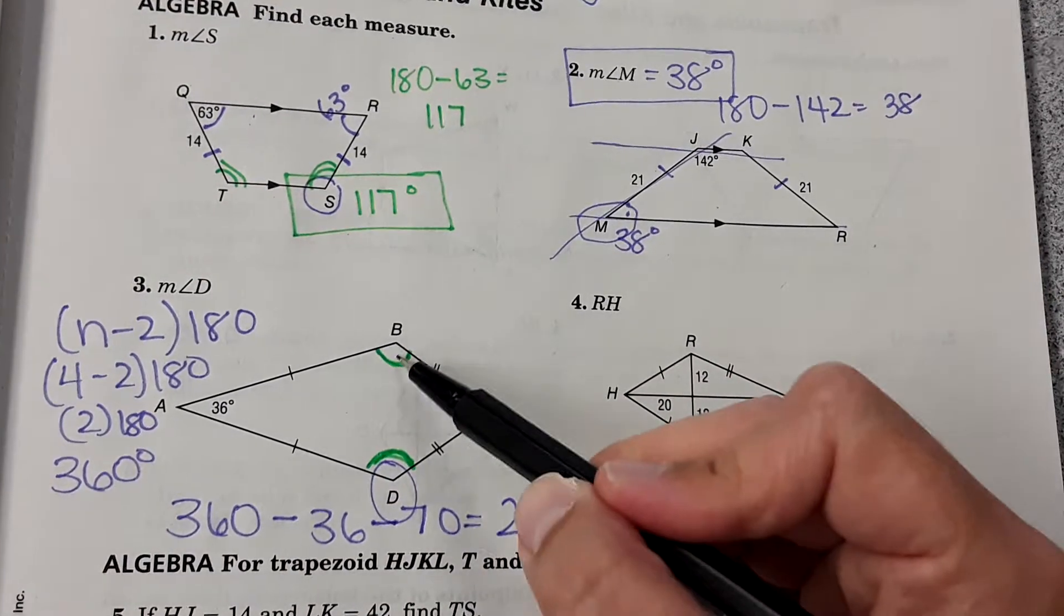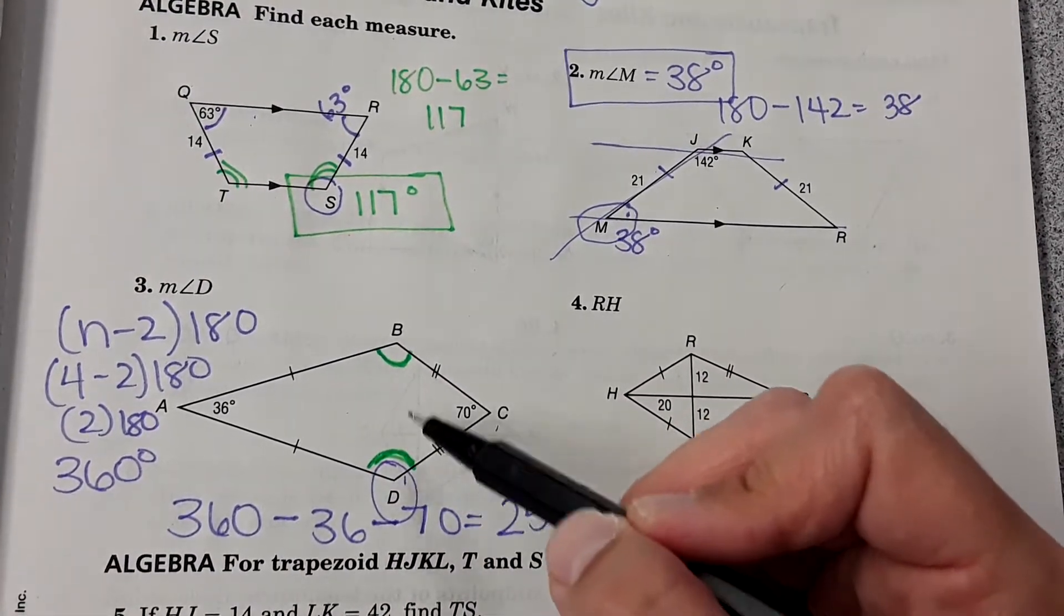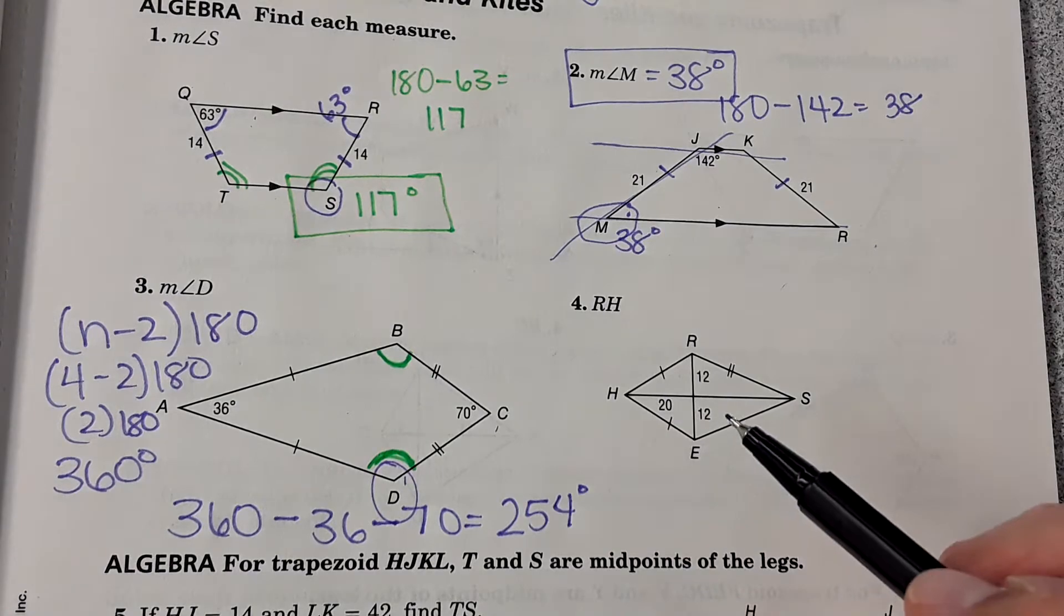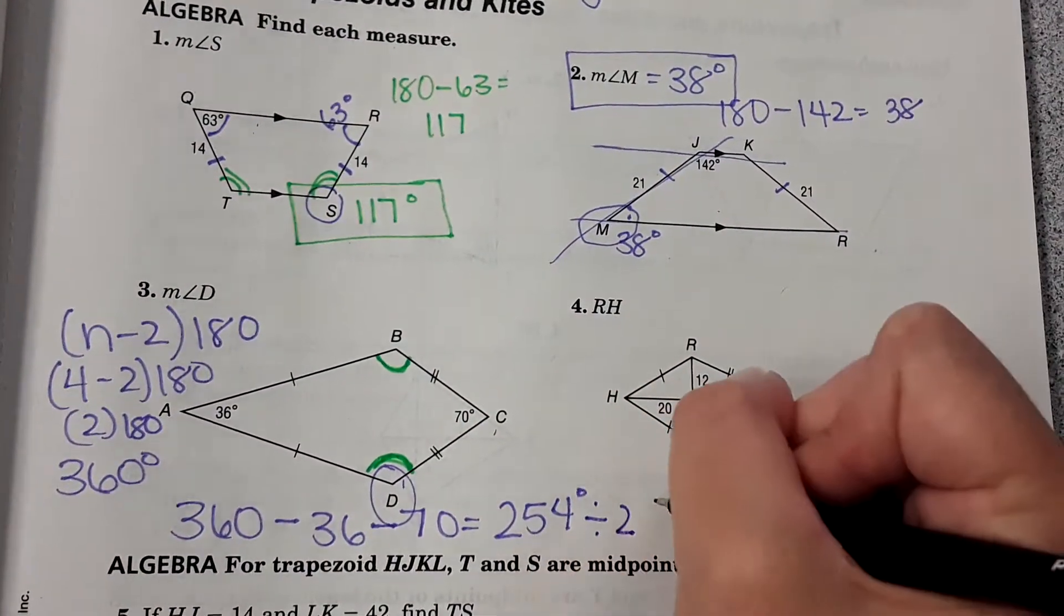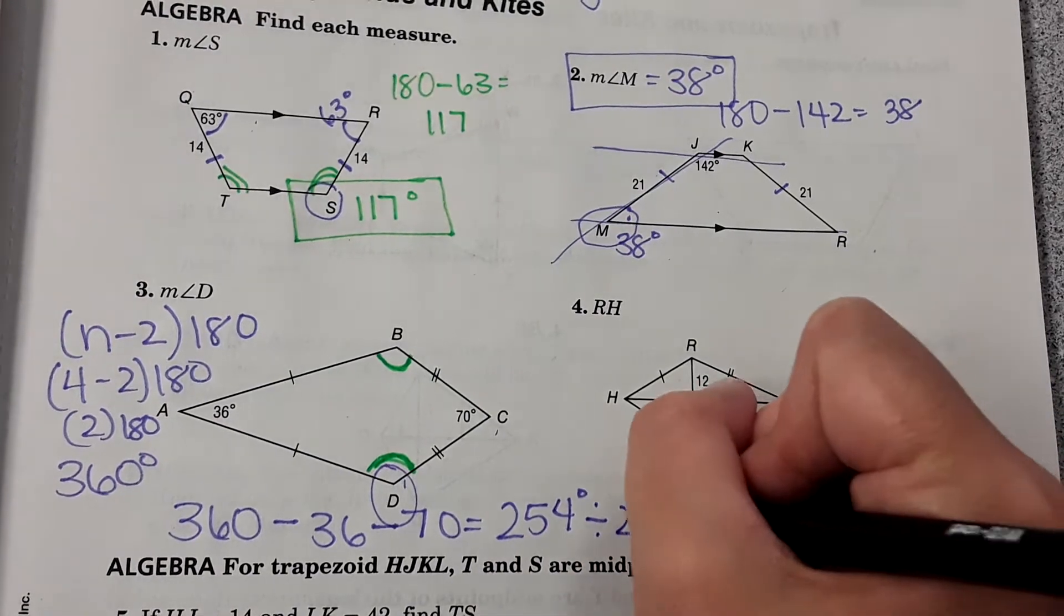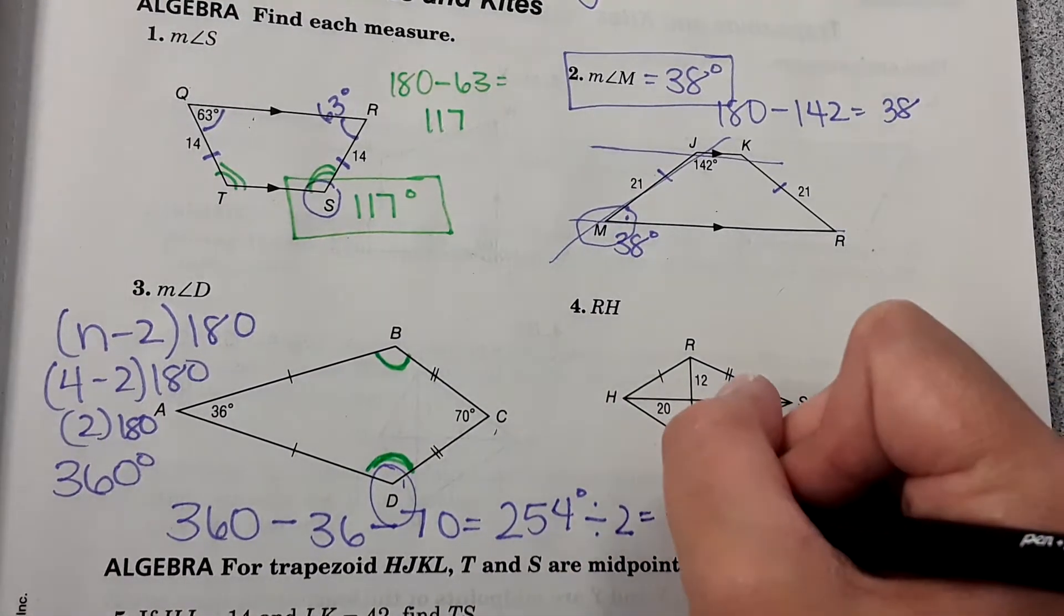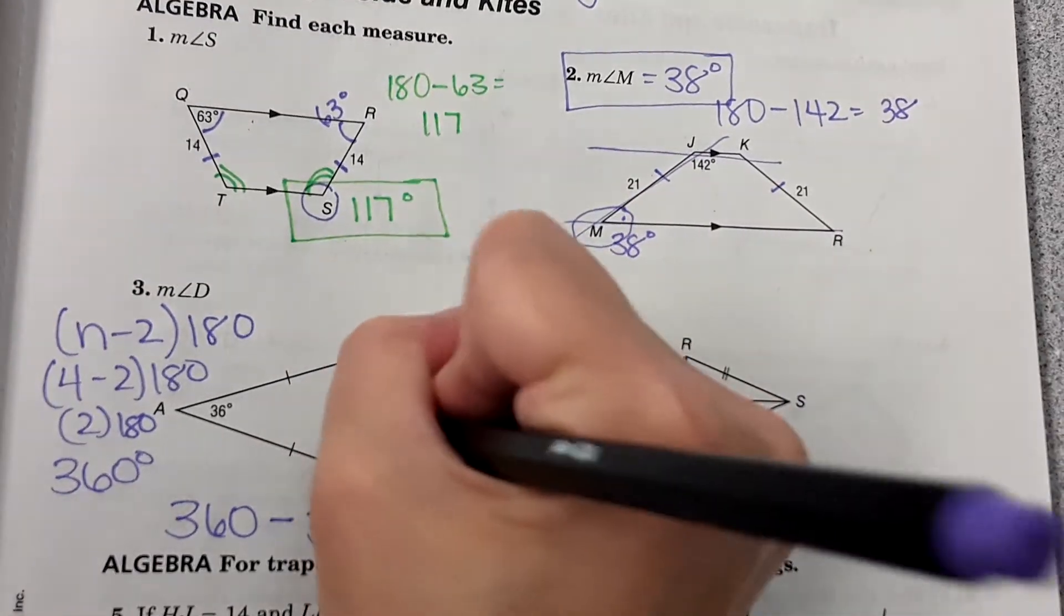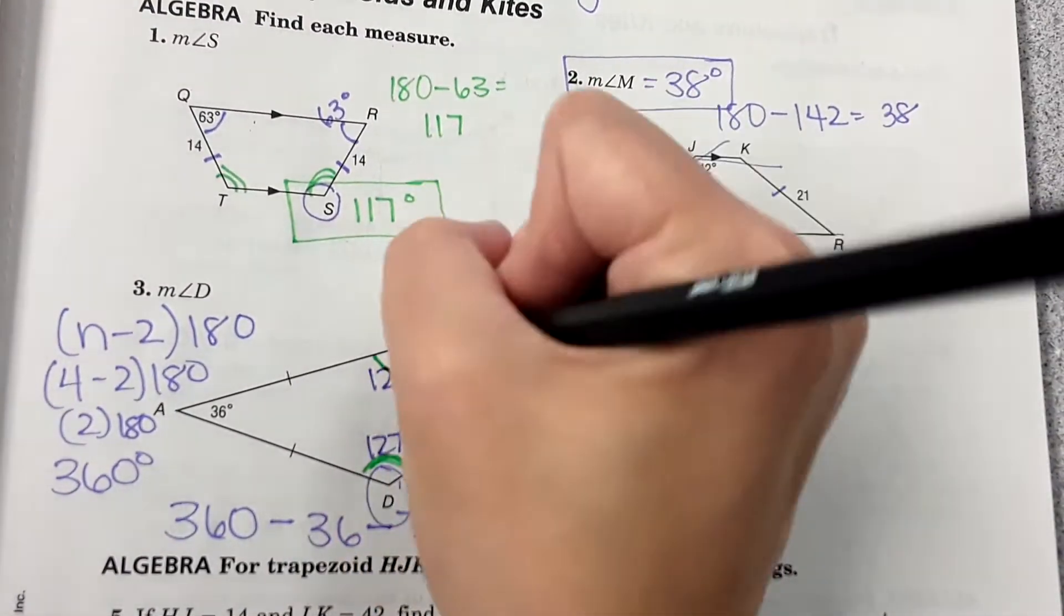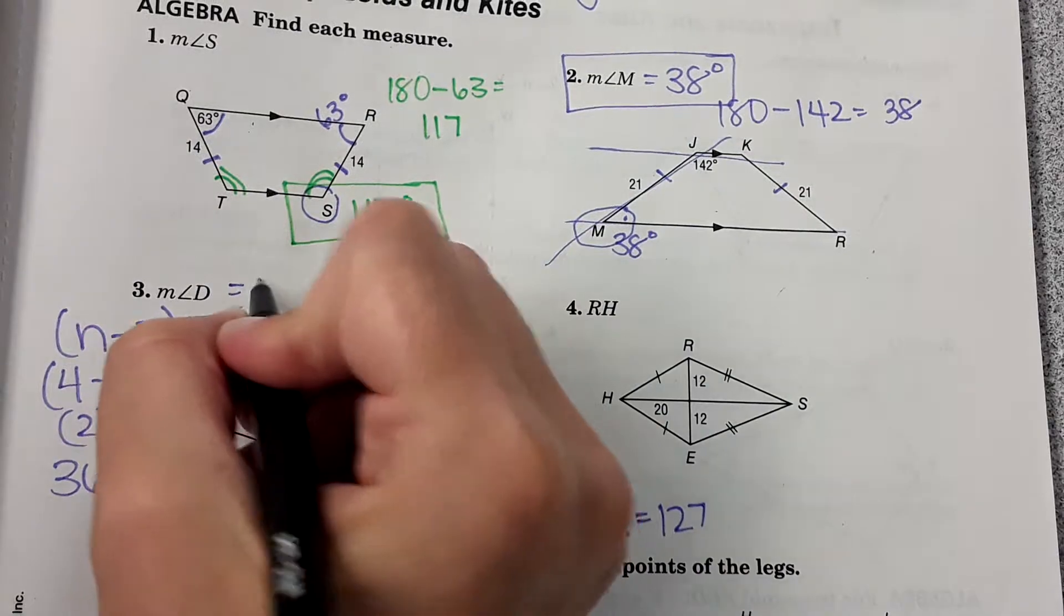This has to be split evenly among those two angles because they are congruent. So now that I have 254 degrees left I'm going to divide that by 2 to get each angle. So 254 divided by 2 is 127. So measure angle D is 127.